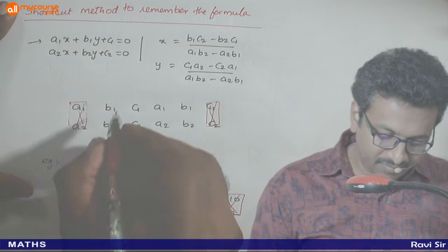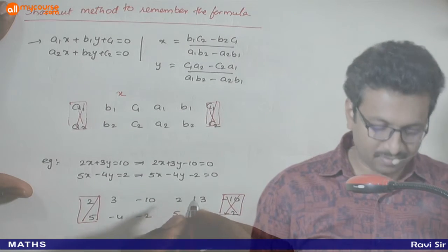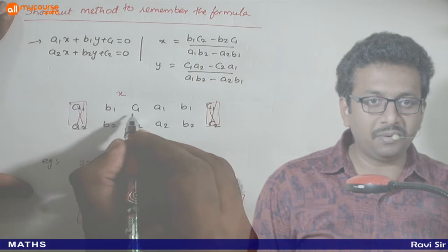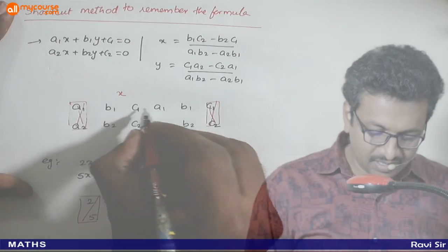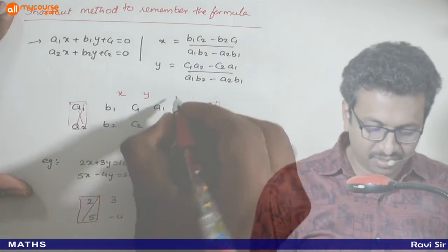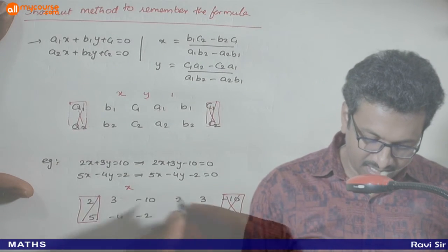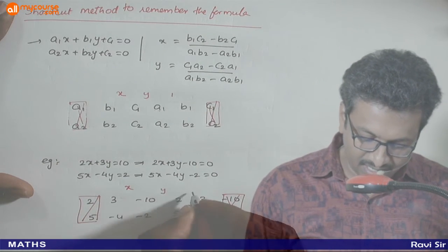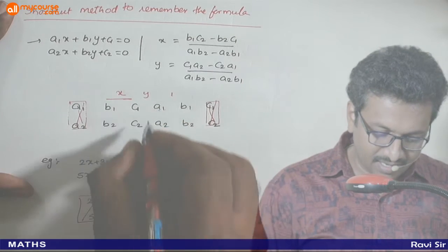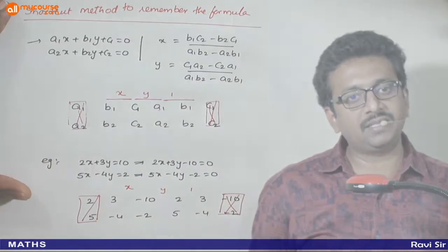Ab kya karna hai: yeh dho sets ke beech mein x likhiye. Pahele dho numbers ke upar x likhiye, doosre dho numbers ke upar y likhiye, teesre dho numbers ke upar 1 likhiye. And you draw something like this — divided by, divided by, divided by — yehaan jaisa likhiye.